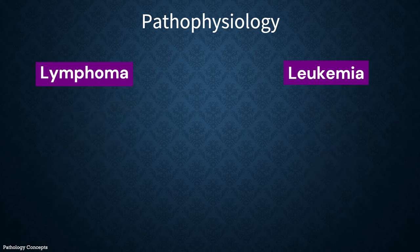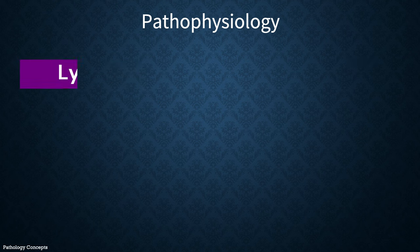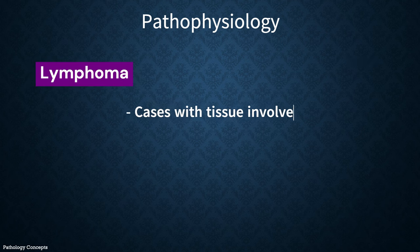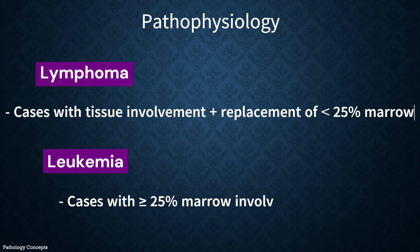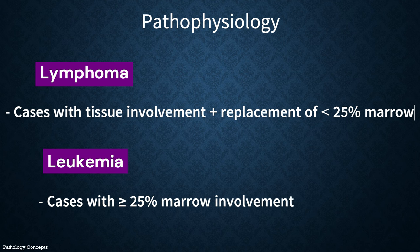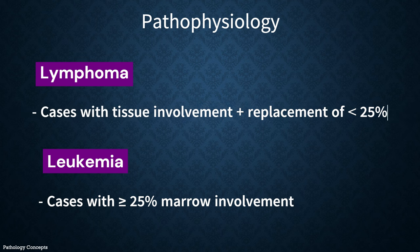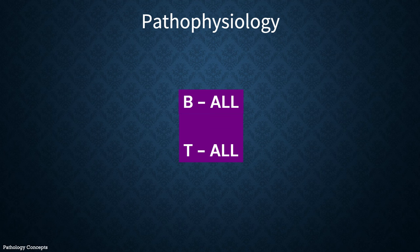Separation of lymphoblastic leukemia and lymphomas is based on the measurement of disease burden or stage. Cases with tissue involvement and replacement of less than 25% of bone marrow by lymphoid blasts are classified as lymphoblastic lymphoma, while cases with greater than or equal to 25% bone marrow involvement by blasts are classified as lymphoblastic leukemia. ALL is broadly classified into two types: B-ALL and T-ALL.